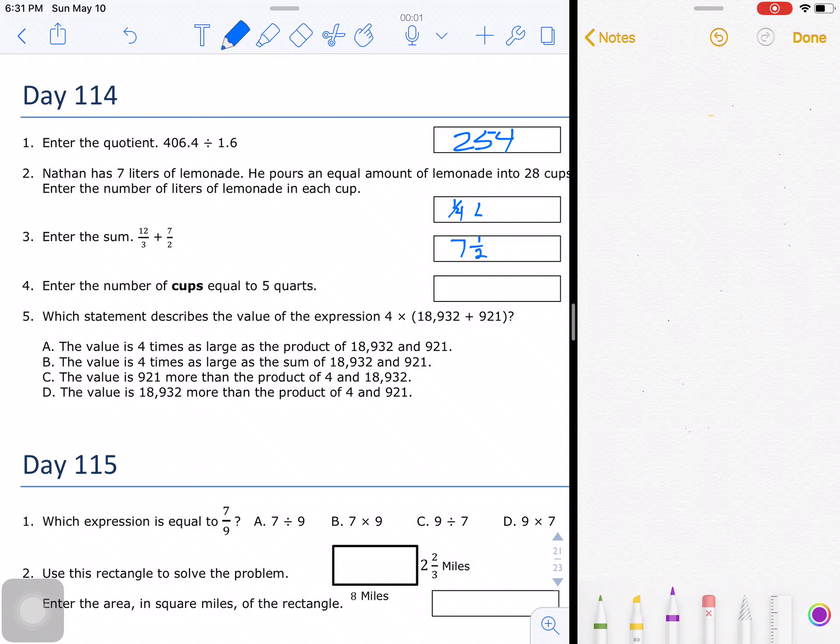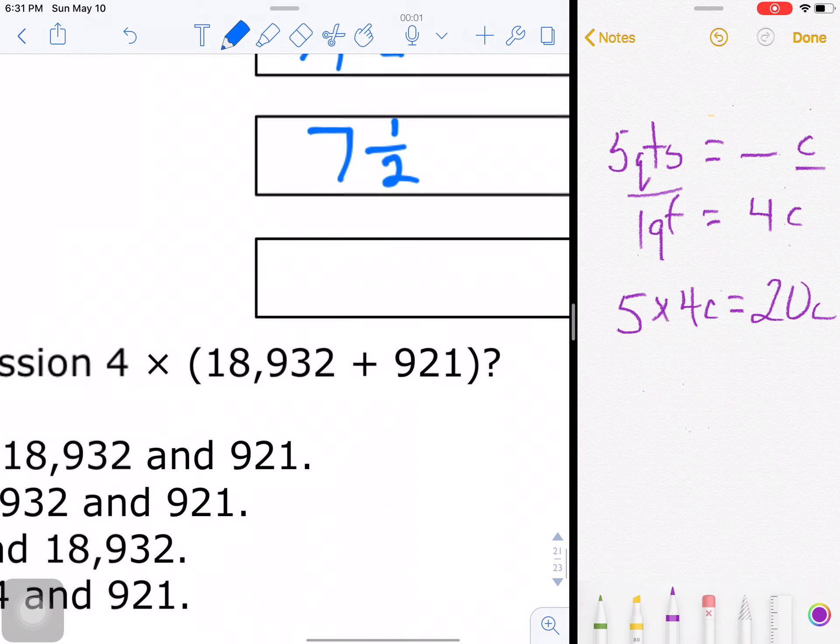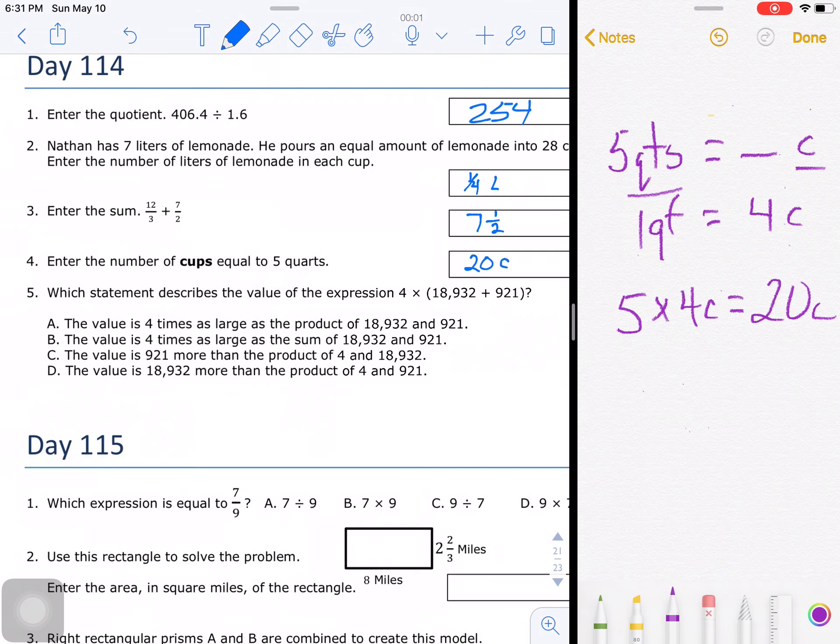Enter the number of cups equal to 5 quarts. So I have 5 quarts equals blank cups. And 1 quart is equal to 4 cups. I have a larger unit going to a smaller unit, so I'm going to multiply. 5 times 4 cups is 20 cups. So 5 quarts is equal to 20 cups.